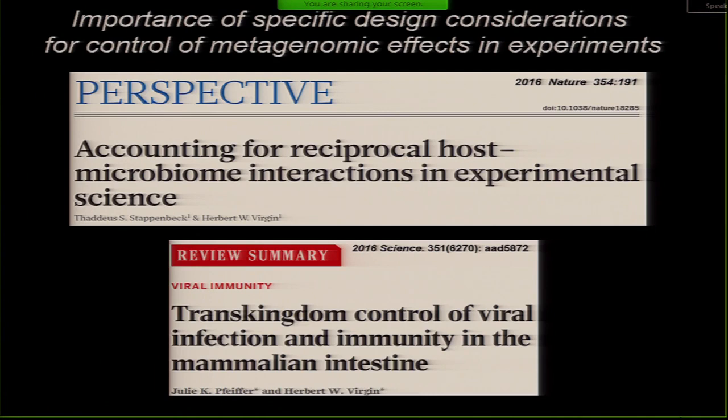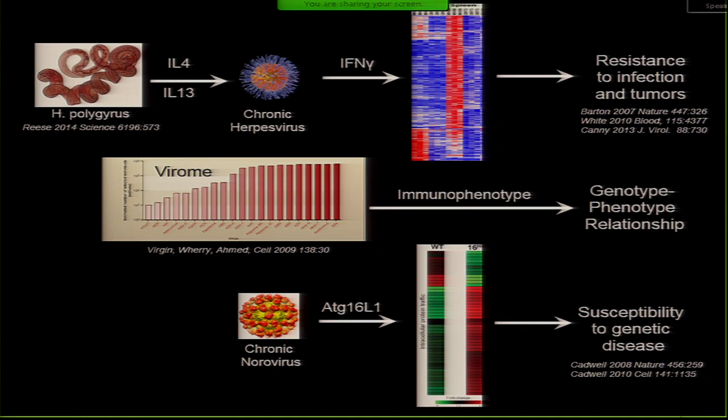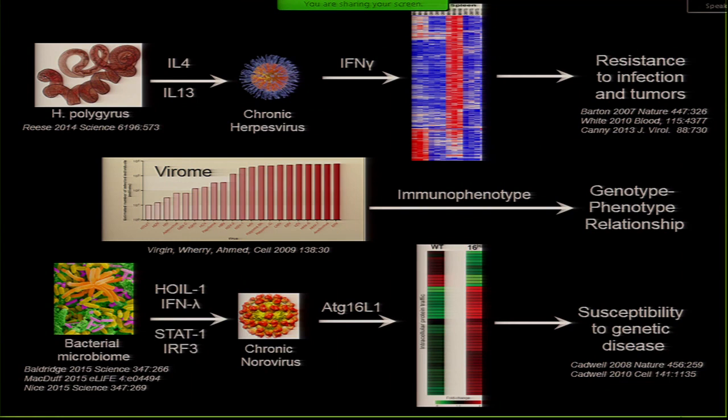This concept is outlined in two different reviews. The idea is that helminthic worms control the virus, which controls gene expression, which controls bacterial resistance. And bacteria actually control a persistent virus, which interacts with the host gene to control susceptibility to disease. I'll briefly take you through those.